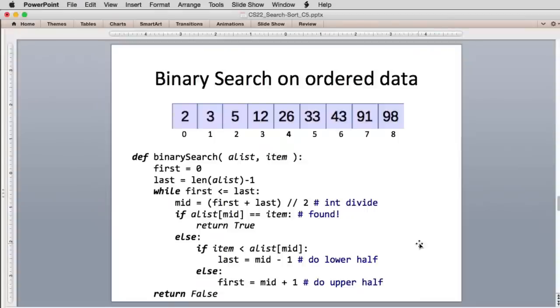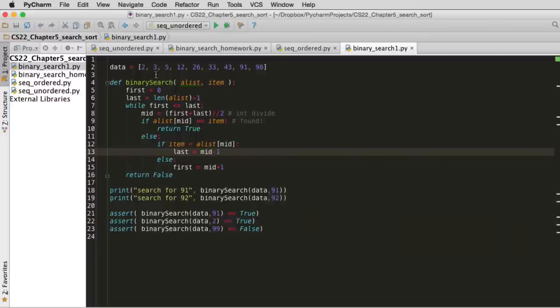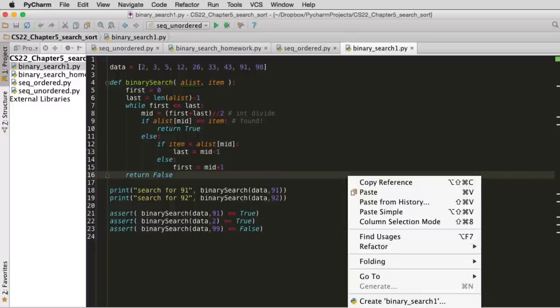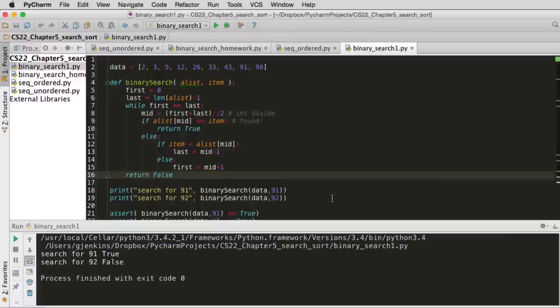Okay, well now let's look at it run. So here's the binary search code and we have the same test we had for the sequential search and we'll go ahead and run it. And you see it passes all the tests.